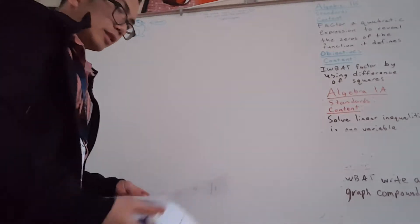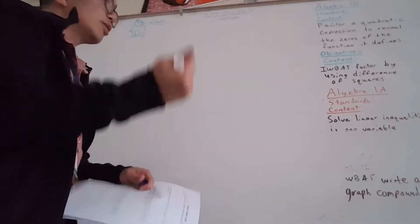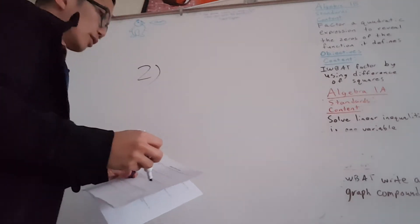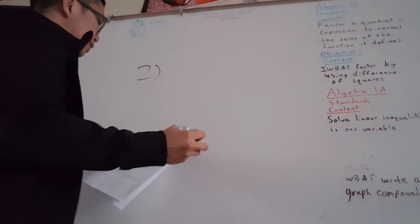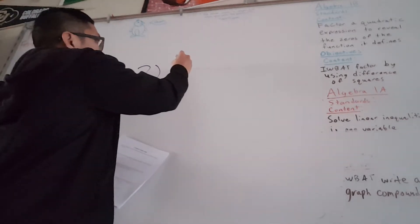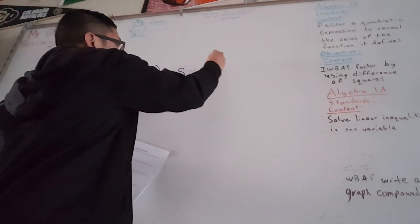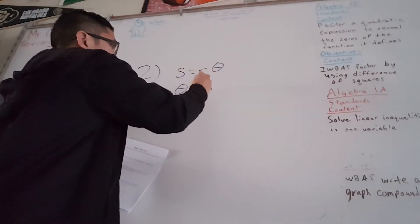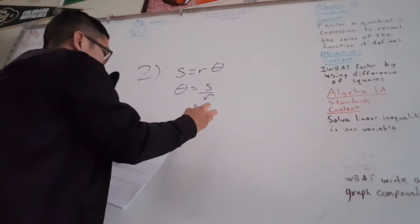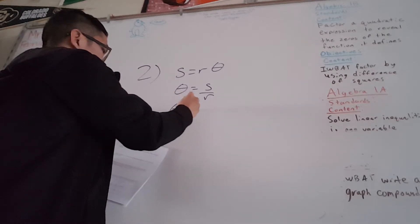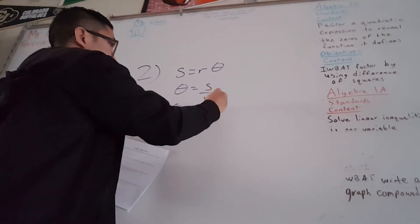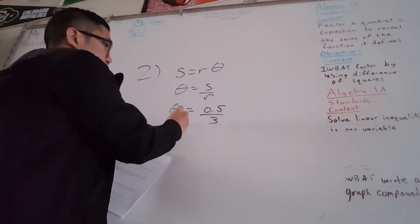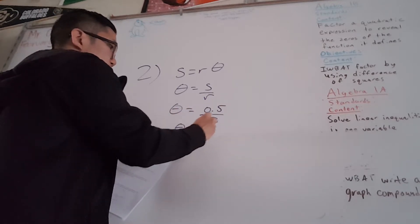I'm going to go over number two. You're trying to find the angle and the area of the sector. Remember that the arc length is equal to r times theta. So we solve for theta — theta is equal to the arc length over r. In this case the arc length is 0.5, which is just 1.5 over 3. So theta here is 1.6 radians.